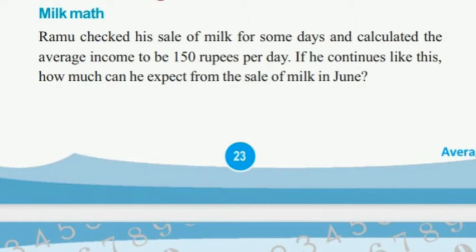Let's begin. Page number 23, some other problems - milk math. Ramu checked the sale of milk for some days and calculated the average income to be 150 rupees per day. If he continues like this, how much can he expect from the sale of milk in June?